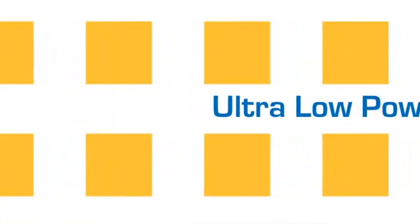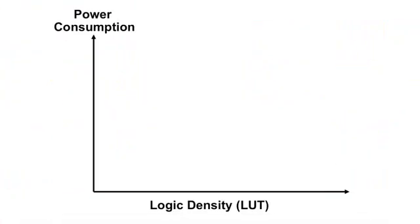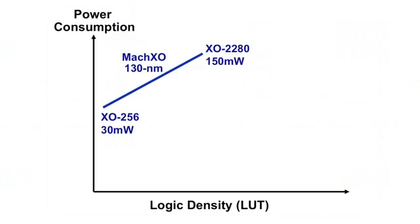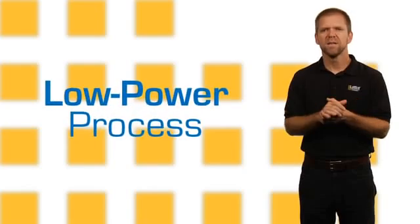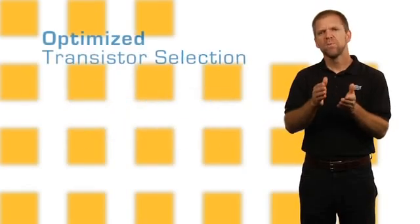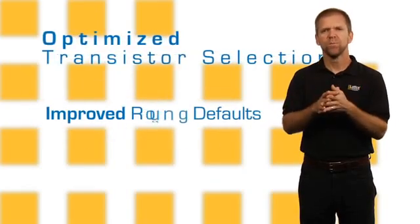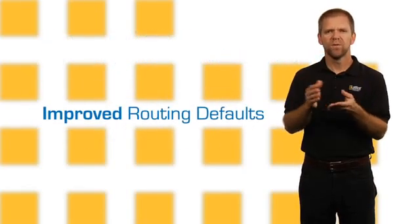Architecting PLDs for low power presents some serious challenges, including thermal management and system reliability. We designed the Mach XO2 family to deliver the maximum functionality at extremely low power. The power advantage is achieved by using a low-power process, optimized transistor selection, and improved routing defaults and algorithms in the software.